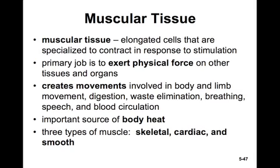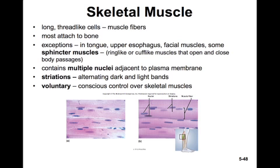There are three types of muscle tissue. Skeletal muscle cells are long, thread-like cells. Most skeletal muscles are attached from bone to bone — the exceptions are in the tongue, the upper esophagus, some facial muscles involved in facial expression, and some sphincter muscles, like cuff-like muscles that open and close different body passages such as the anus. They contain multiple nuclei, which are pushed up adjacent to the plasma membrane because the cells are full of protein content. Skeletal muscle is striated — meaning it's striped, as seen in the figure.